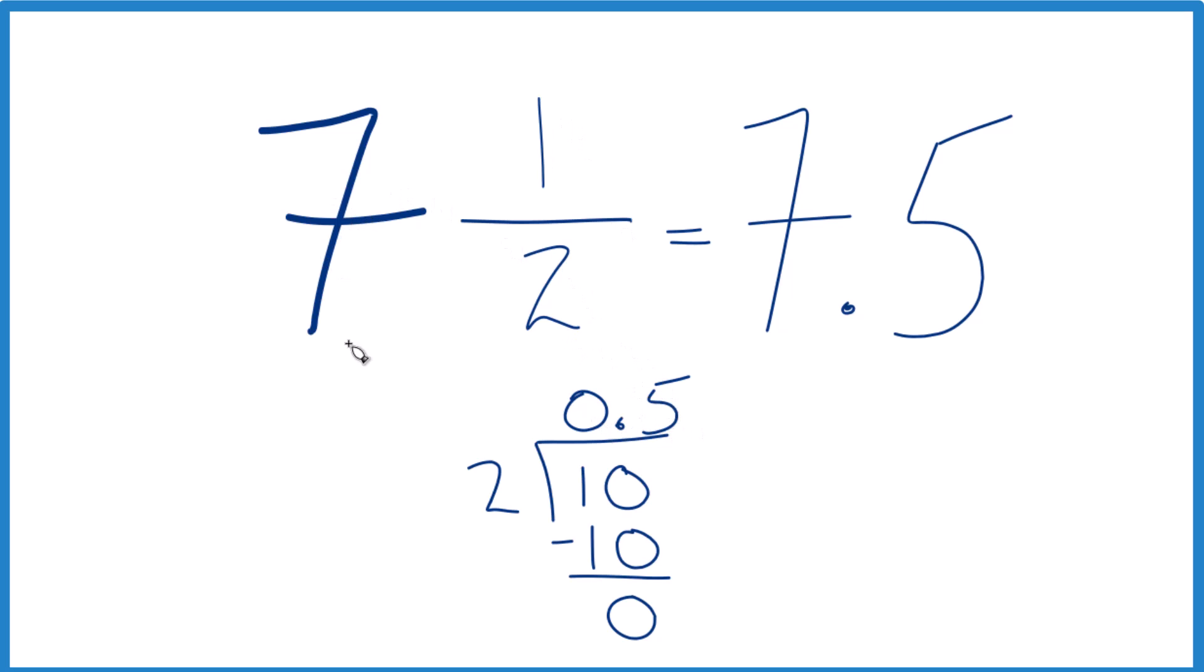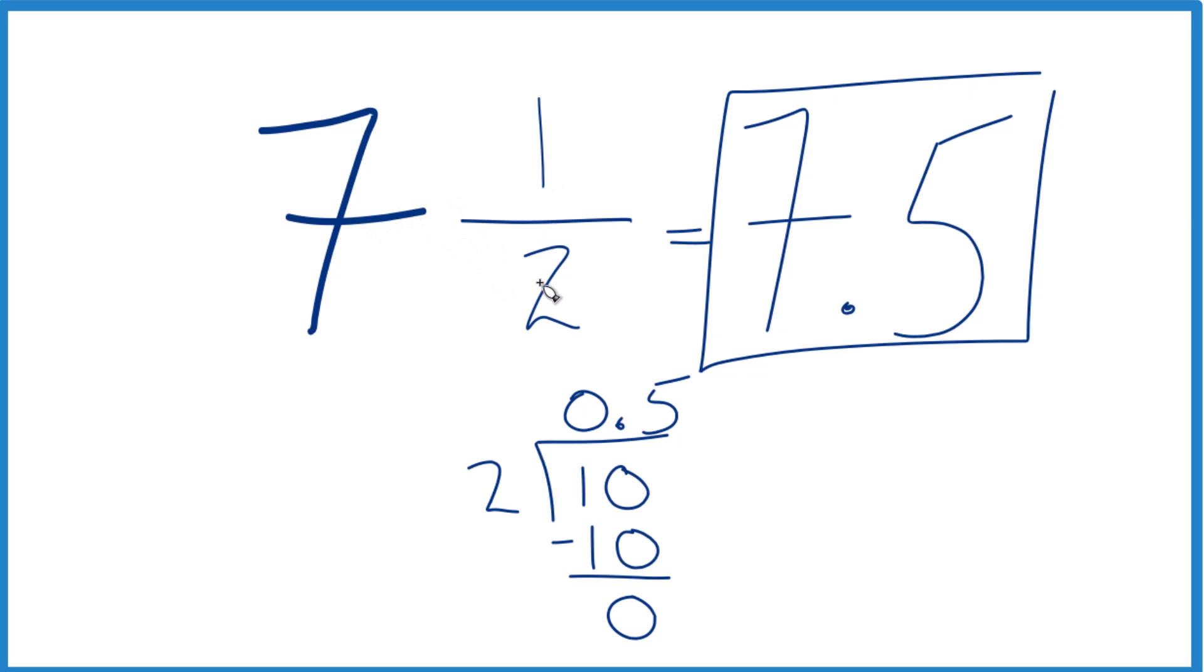And if we have 7 plus 0.5, we get 7.5. So in answer to our question, when we convert the fraction 7 1/2 to a decimal, we get 7.5.